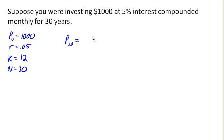So the amount after 30 years would be $1,000 times 1 plus 0.05 over 12 to the 12 times 30. Now when we go to evaluate this on our calculators,